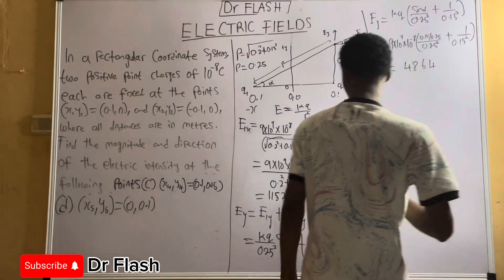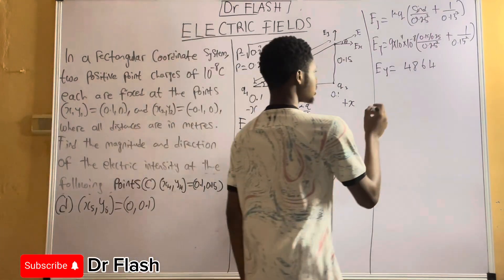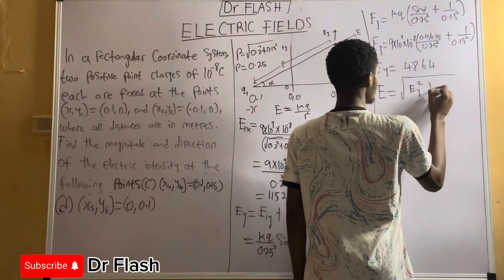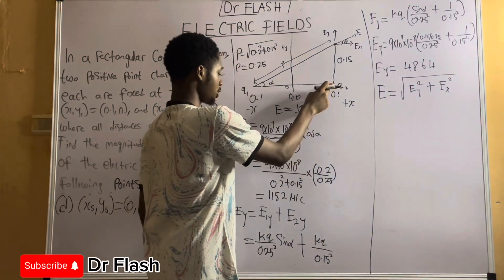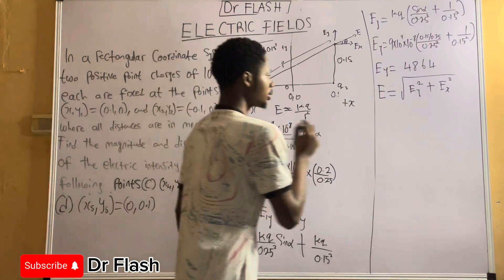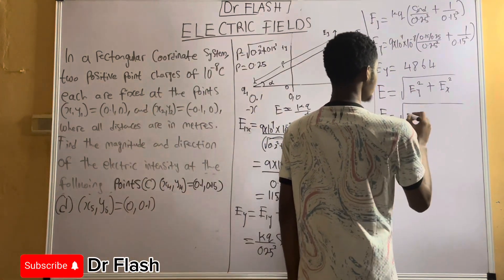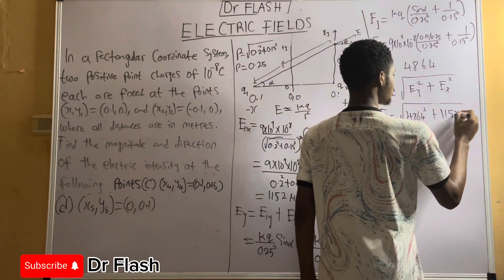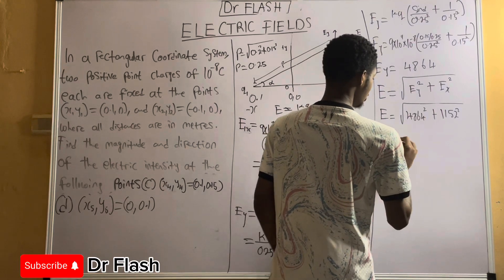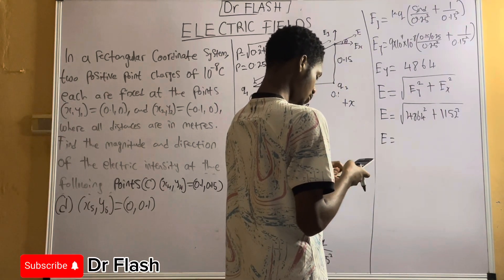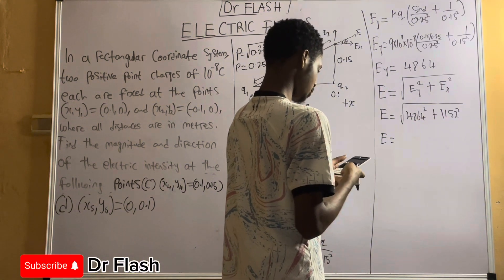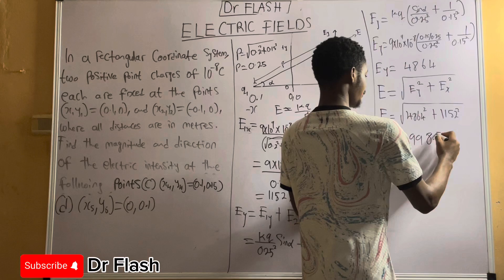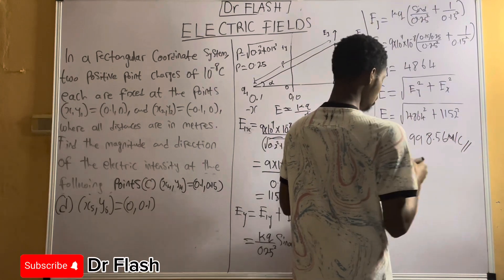The net electric field intensity E is found using the Pythagorean theorem: E = √(Ey² + Ex²). We have Ey = 4864 and Ex = E1x = 1152. So E = √(4864² + 1152²), which gives a final value of approximately 4998.56 newtons per coulomb. That is the value of the net electric field at this point due to the two charges.